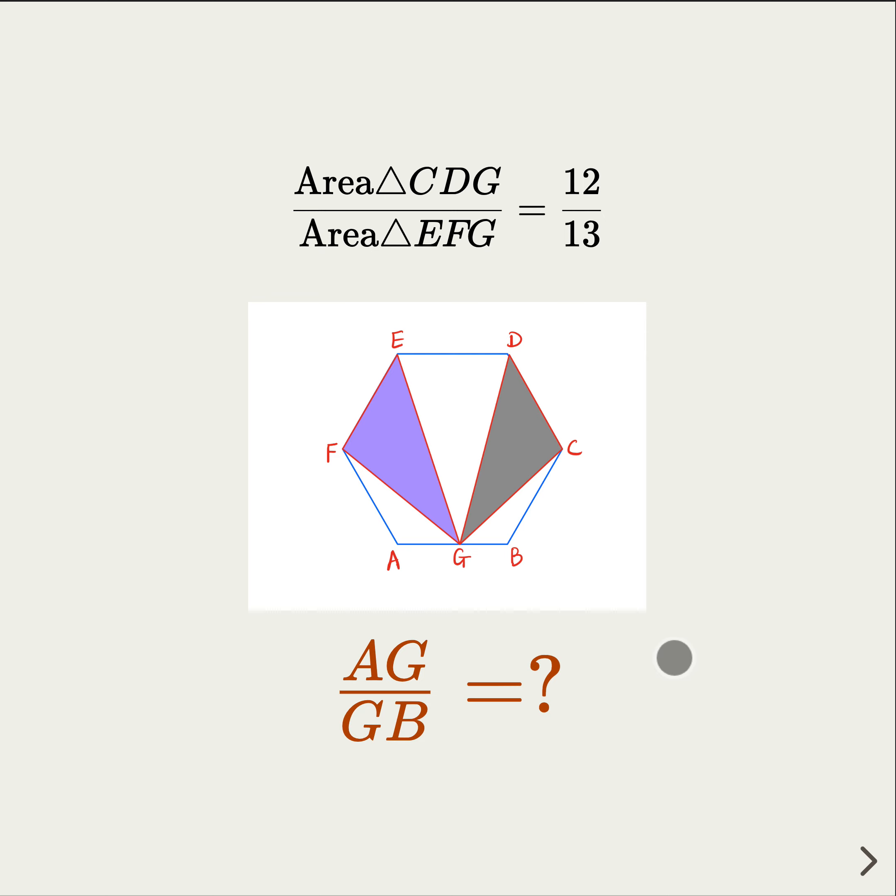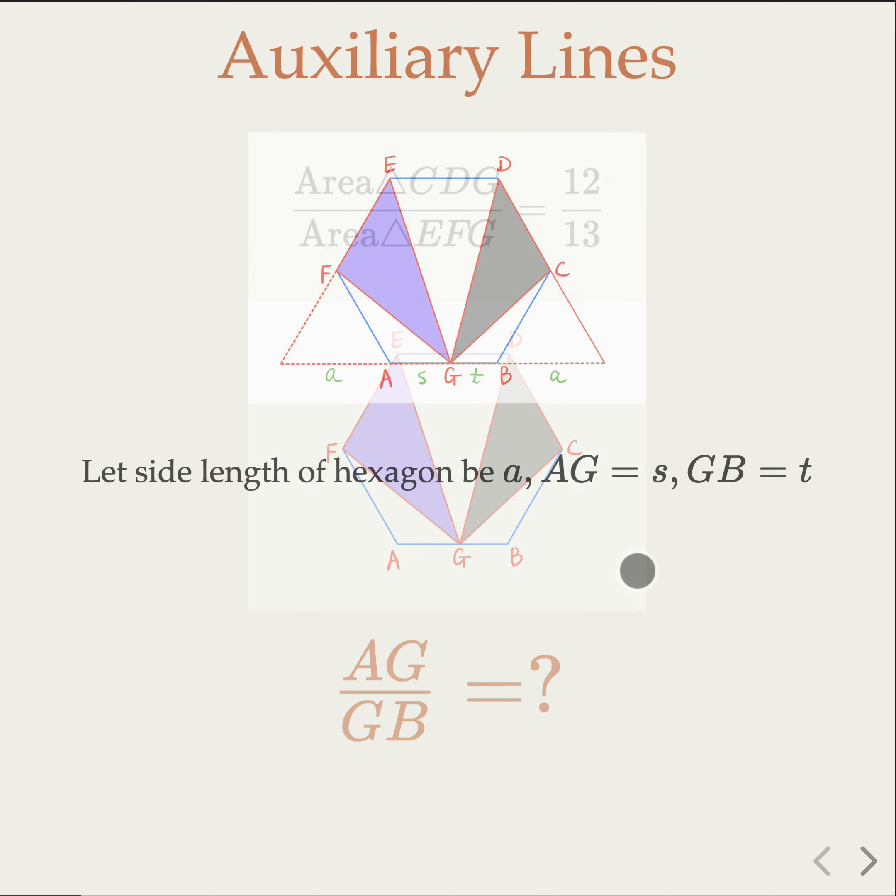Now in any geometry problem, the trick is to find the proper auxiliary lines so that we make the problem easier to analyze. Now here, what we want to do is to extend this line segment here, and we're going to make a regular triangle here on the side here.